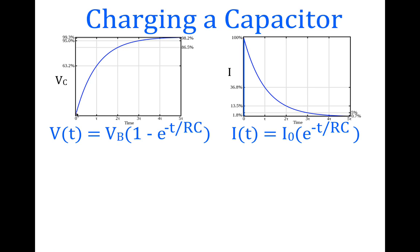The voltage is not expressed as volts in the sense of one, two, three, four, five volts — it is expressed as a percentage of the maximum voltage across the capacitor. The current is expressed as a percentage of the initial maximum current through the circuit. So the time is in time constants, and the voltage and the current are in percentages.